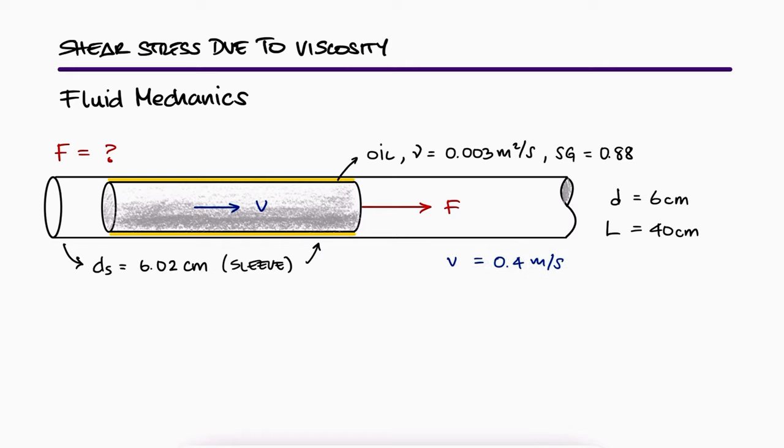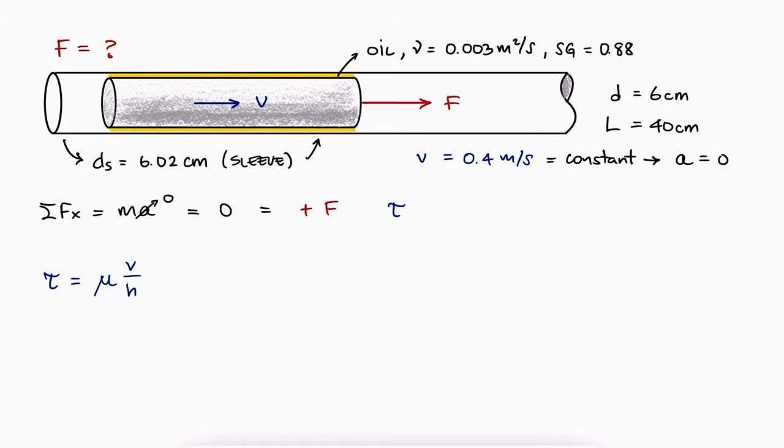If the shaft is being pulled at a constant speed, it means that it's not accelerating. This means that the sum of forces in the x-direction is equal to 0. The force is acting on the positive x-direction and the shear stress due to the interaction with the fluid is causing a force in the opposite direction.